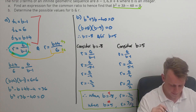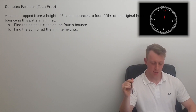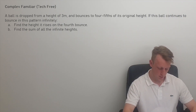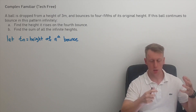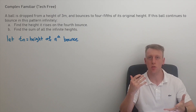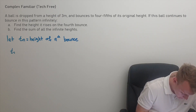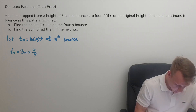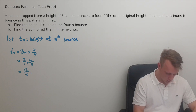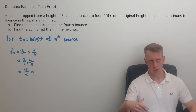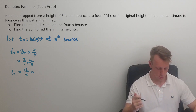This is another tech free question — complex familiar — and should take you roughly six to eight minutes. The ball starts dropped from three meters high and bounces four fifths of its height each time. Let t(n) equal the height of the nth bounce. Since the ball is dropped from three meters, the first bounce height is four fifths of three, which is twelve fifths of a meter — that's 2.4 meters.